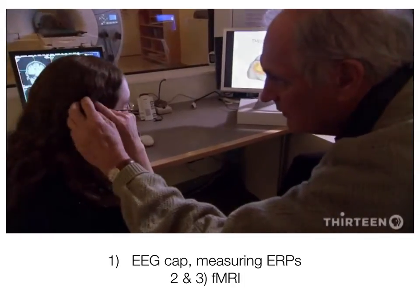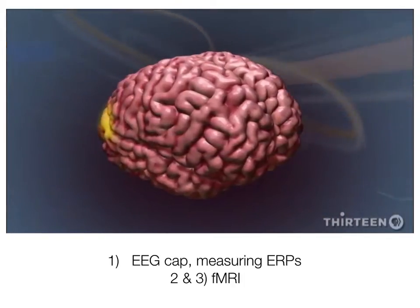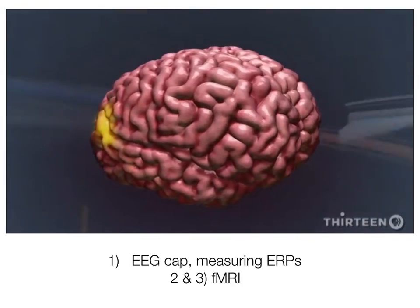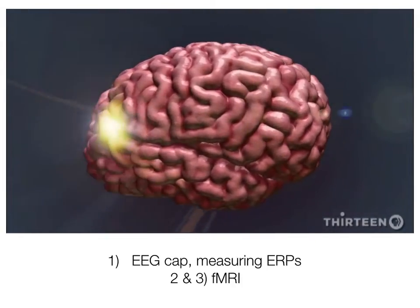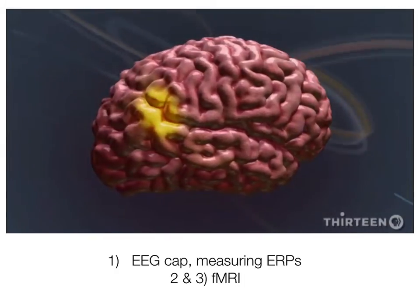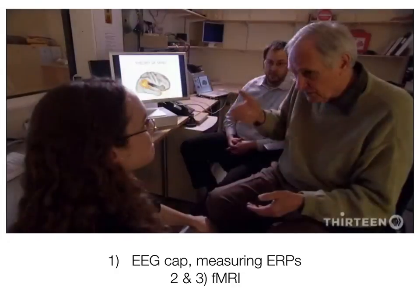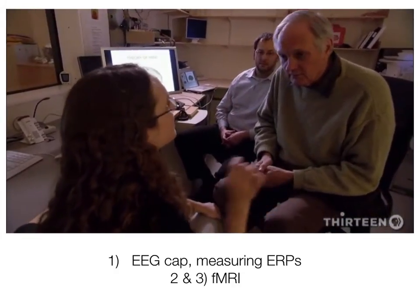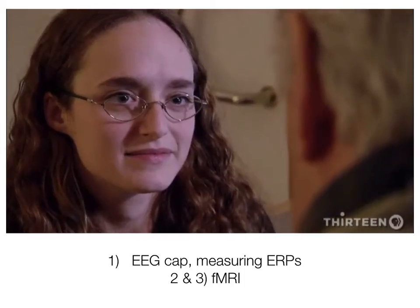Sitting just above the right ear is a patch on the surface of the brain that allows us to see into other people's minds, or at least wonder about what they're thinking. This region activates specifically when you're thinking about somebody else's thoughts, not just any kind of thoughts. And that ends our video on neuroimaging. Thanks!